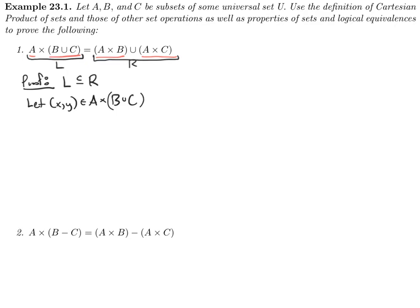We want to show that this element X, Y is also in A cross B union A cross C. So what does this mean? This means that X is an element of A, since the first coordinate has to be an element of the first set, and Y is an element of B union C. That means that Y is an element of B, or Y is an element of C.